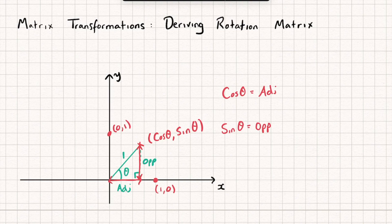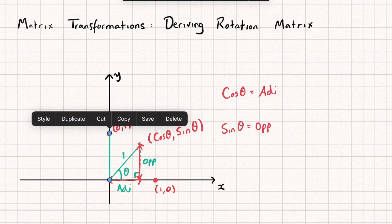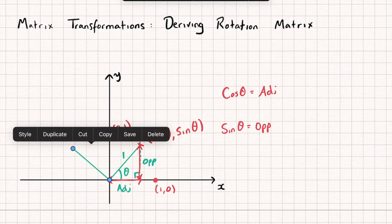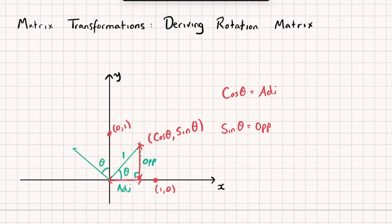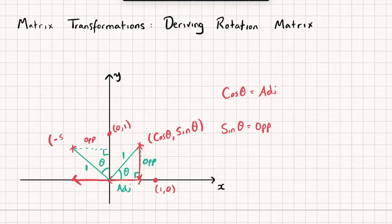Now we repeat this process for the coordinate (0, 1). Imagine rotating it around by the same angle theta — let's construct another right angle triangle. The x coordinate is how far we've traveled along the x axis, which is the opposite side of this triangle. Since the hypotenuse is one, sin θ equals the opposite. But we've moved to the left of the y axis, so this x coordinate is negative sin θ.